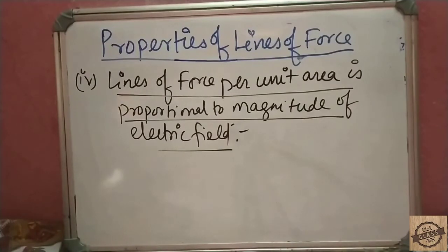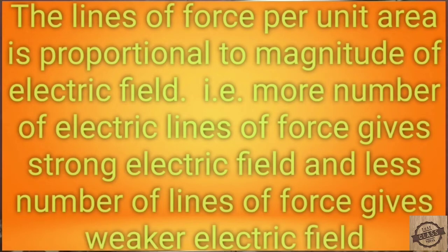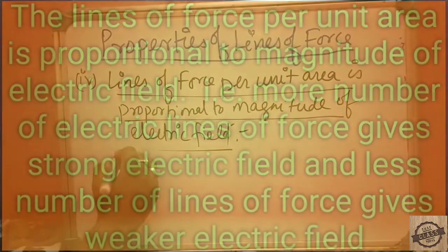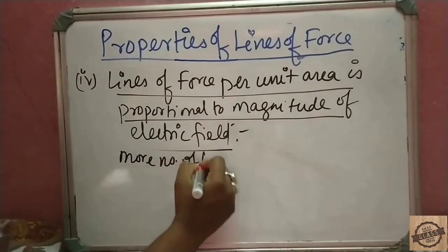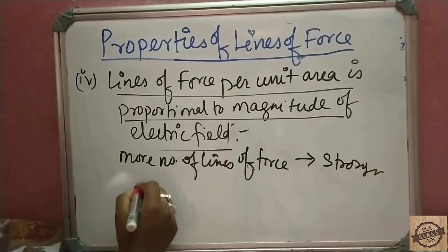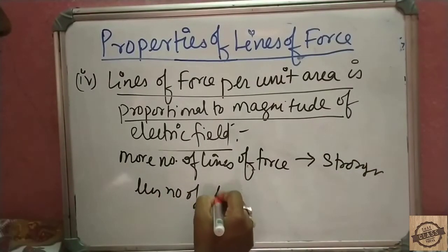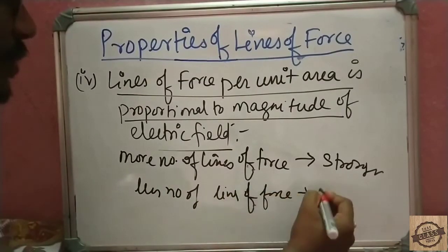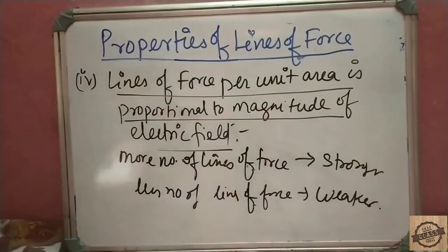The next point: lines of force per unit area are proportional to the magnitude of the electric field. This means more lines of force correspond to a stronger electric field, and fewer lines of force correspond to a weaker electric field.